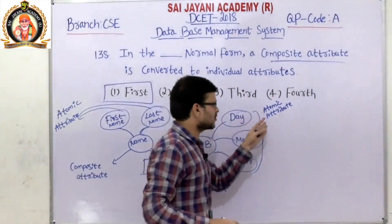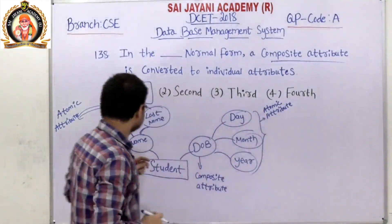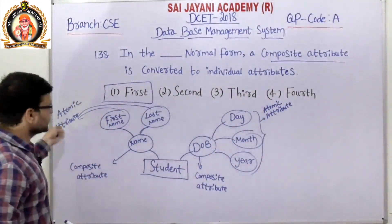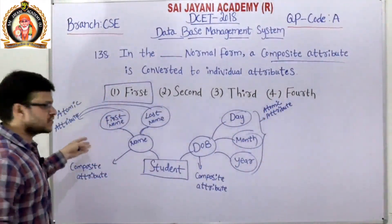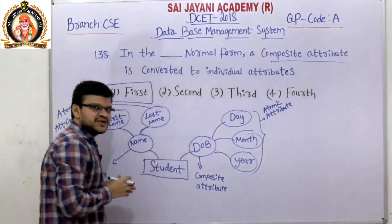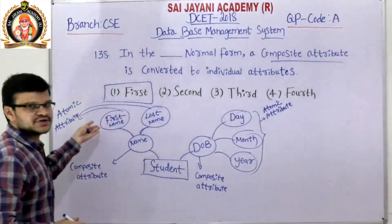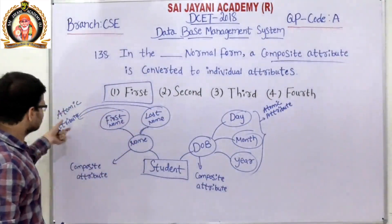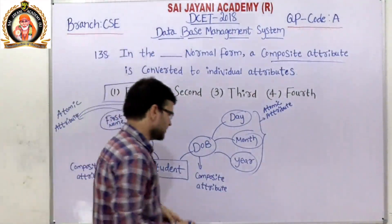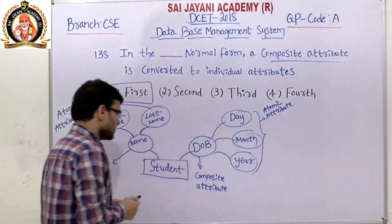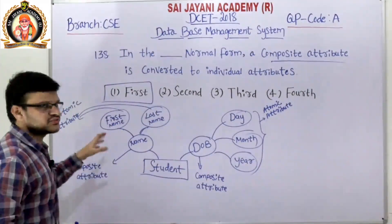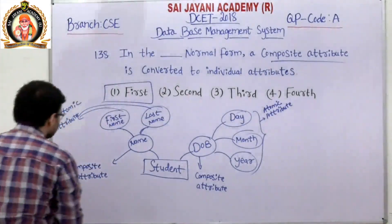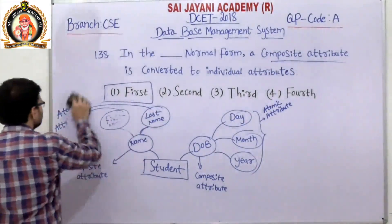Atomic attributes are attributes which cannot be further divided into sub-attributes. First name and last name cannot be further divided, so they are atomic attributes. Now consider a student table to understand first normal form.